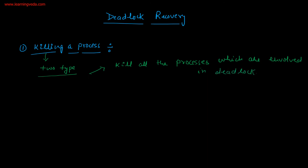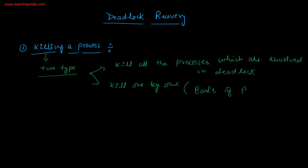The first way is, if you can see that there are 4 or 5 processes involved in deadlock, kill all the processes. Killing all the processes means releasing all the resources from those processes. The second way is to kill one by one on the basis of priority.